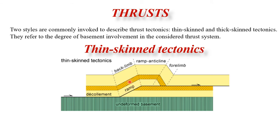Ramps and flats can be identified relative to both hanging wall and foot wall. If a segment is parallel to the foot wall it is a footwall flat; if non-parallel to the foot wall it is a footwall ramp. Thin-skin tectonics means only the sedimentary cover deforms while the basement remains intact — deformation involves the sedimentary cover detached from the basement.